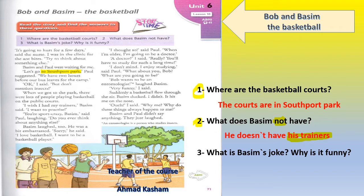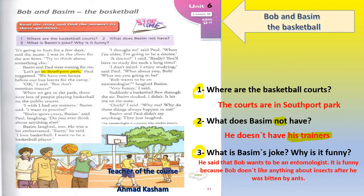Question number three: What is Basim's joke? Why is it funny? We have two parts in this question. The joke was that Basim said Bob wants to be an entomologist — just to upset Bob, because Bob doesn't like to hear anything about insects. He said that Bob wants to be an entomologist. It is funny because Bob doesn't like anything about insects after he was bitten by ants.